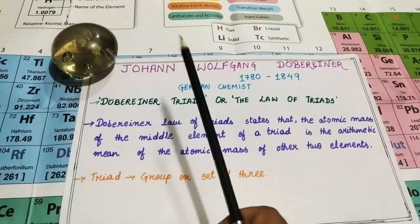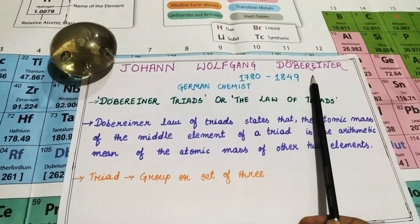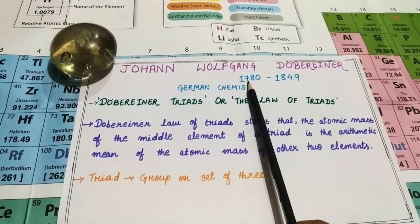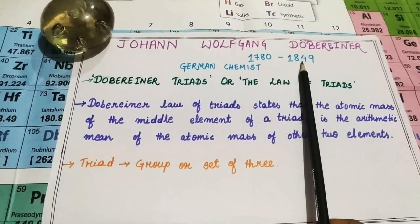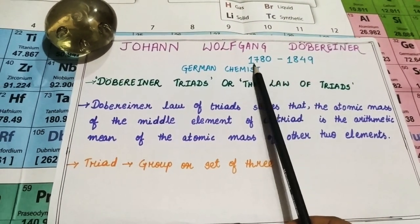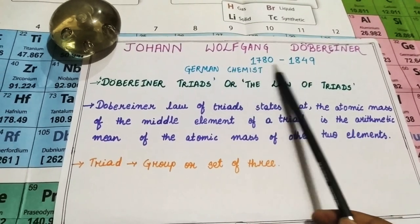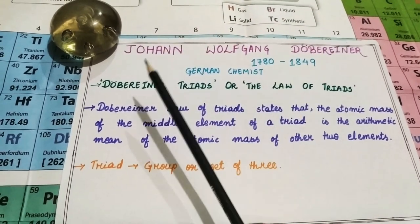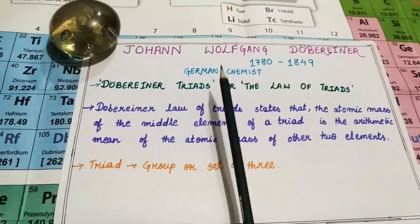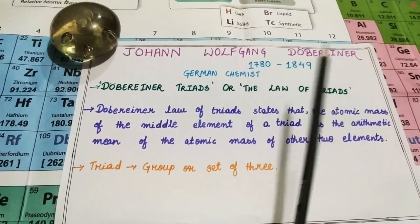Here we are: Johann Wolfgang Dobereiner. He was born in the year 1780 and died in the year 1849. Though this information is not important from the exam point of view, this is just for your general knowledge. He was a German chemist.